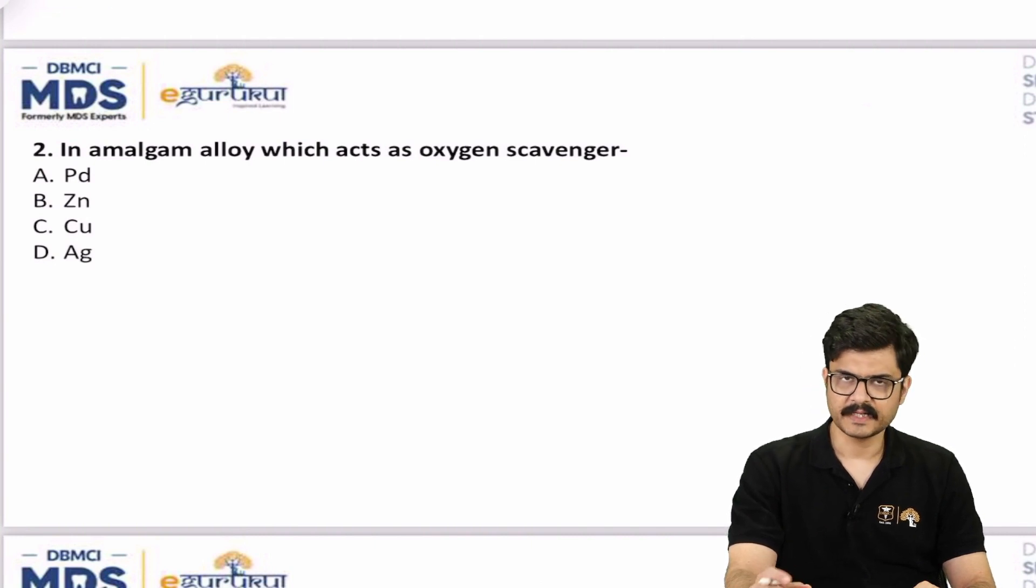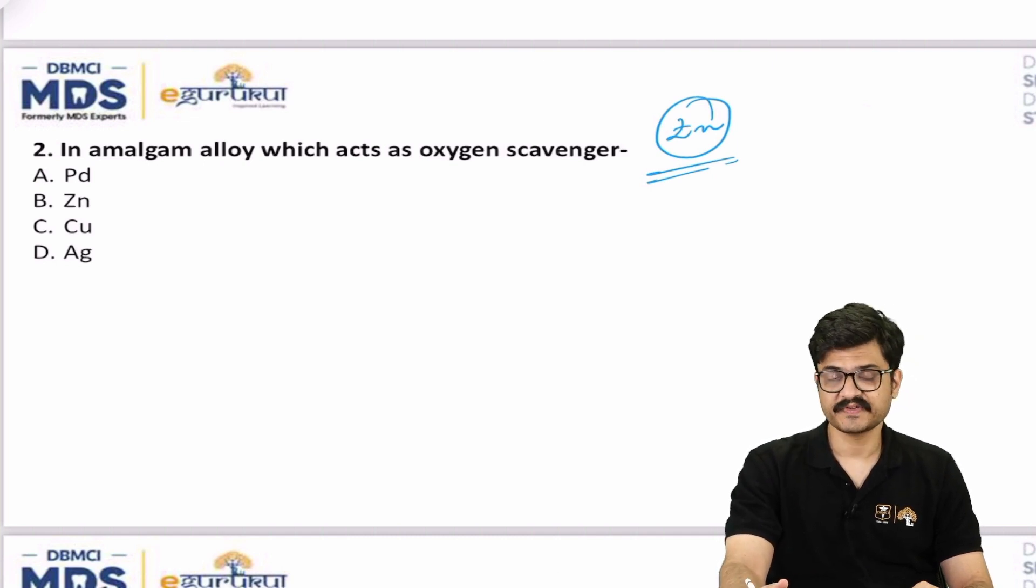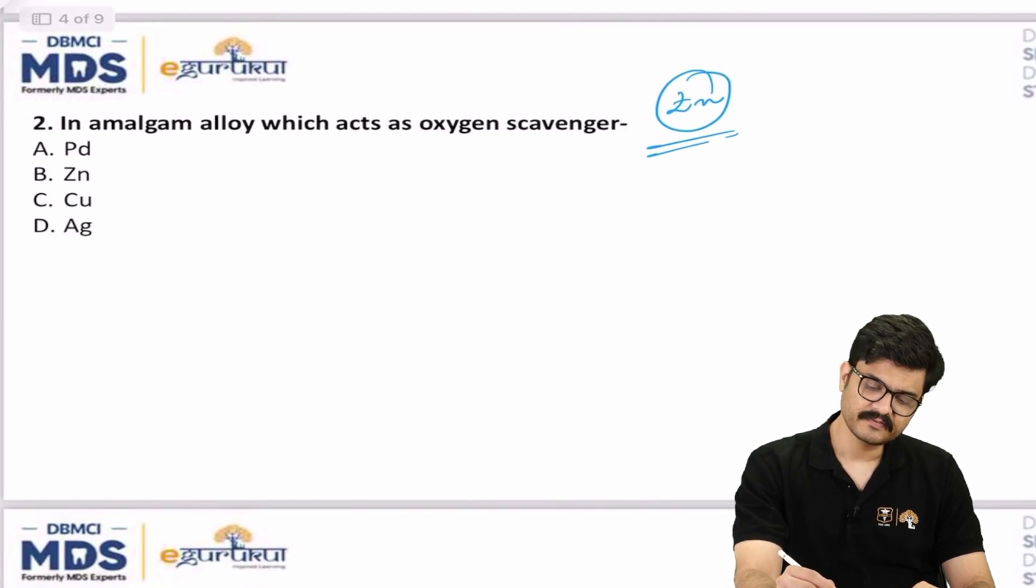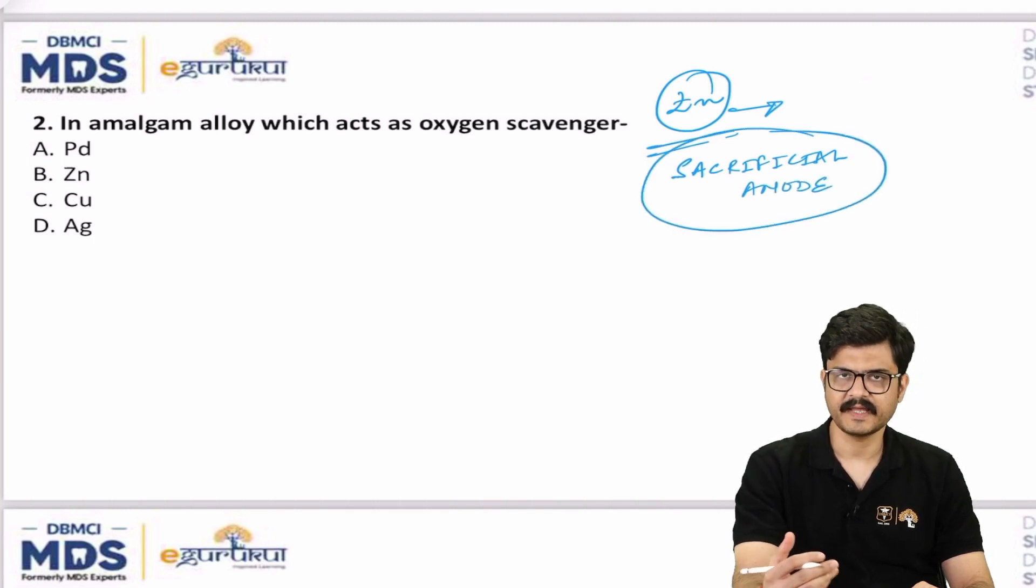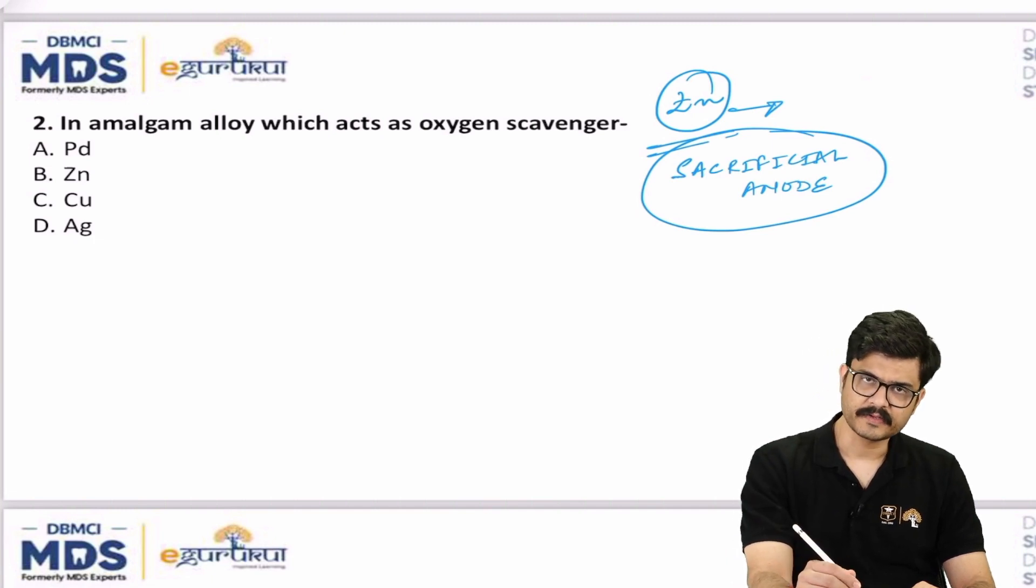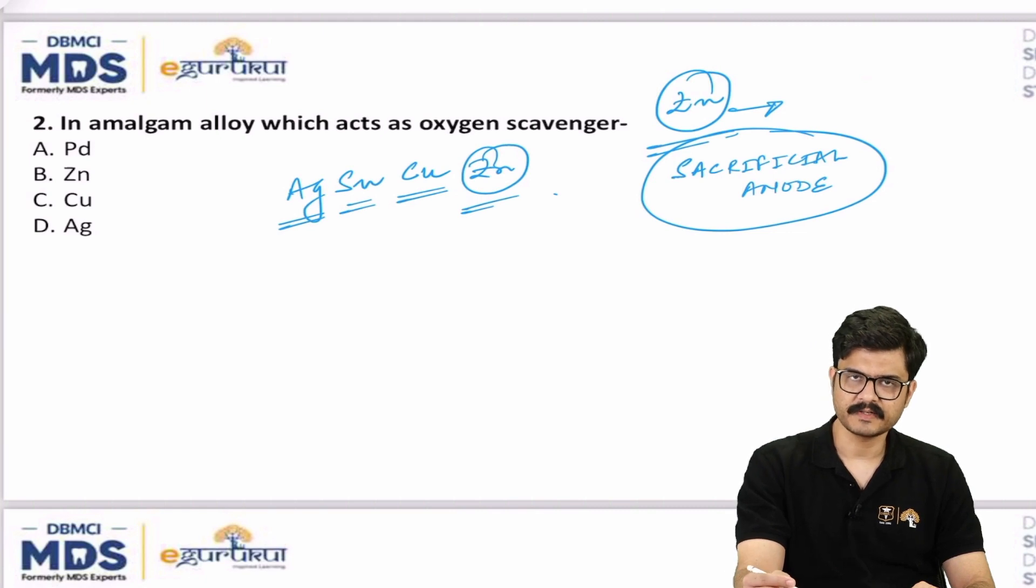In amalgam alloy, which acts as oxygen scavenger? Many times, in fact every time I discuss amalgams, we always discuss about the components. One of the important components is zinc. What is the role of zinc? It helps in improving the handling properties. Zinc containing amalgams usually survive longer periods, their longevity is high. Apart from that, a very important reason why zinc is added is that it serves as the sacrificial anode. What do we mean by this? Sacrificial anode means its electrode potential is much less than the other components of the amalgam alloy.